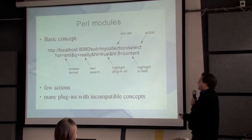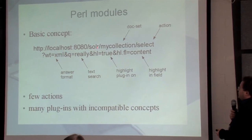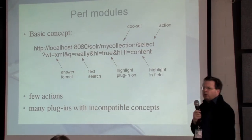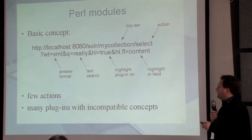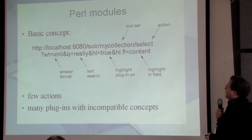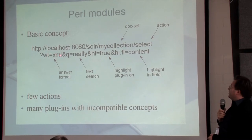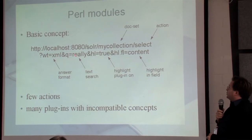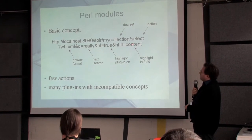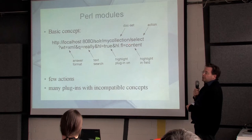The basic concept is this: you have your server, your localhost — this is the top of your namespace. Then you get the name of your collection to be searched, then an action. There are just about four or five main actions, and one action will be 'select' for search. Then you have all these parameters in the URI. For example, I want XML output, this is my query, I want to enable the highlighting plugin, and I want the pattern highlighted in the field named 'content'.